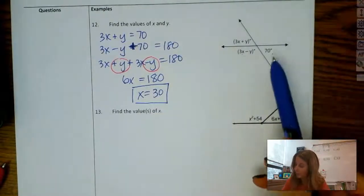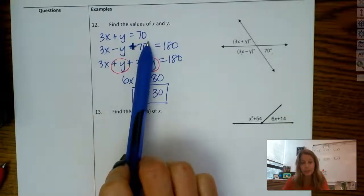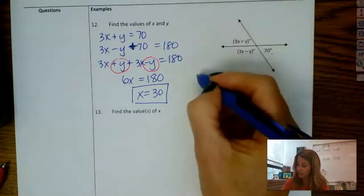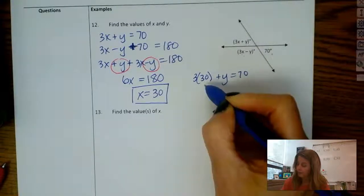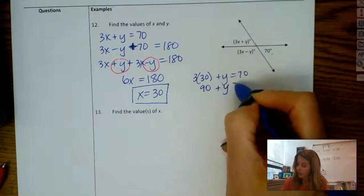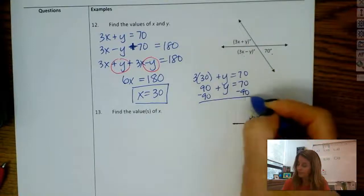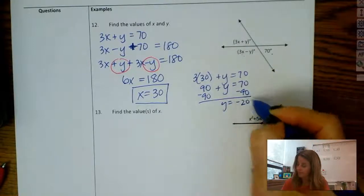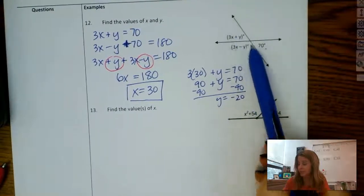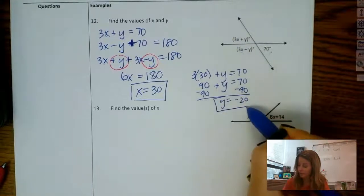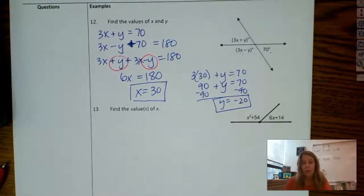And then for y, you could do, I might come back to this setup, or this first one here. 3x plus y equals 70. And now that I know x is 30, I could substitute in that if I want to. So that is 90 plus y equals 70. Take away 90. Now, it's okay to get negative 20, because if I were to take negative 20 and substitute it in, I still get a positive angle measure. So don't be thrown off by potentially getting a negative on your variable.